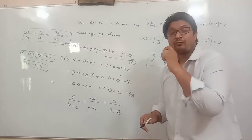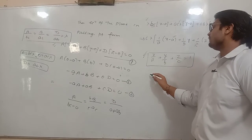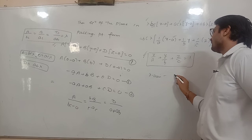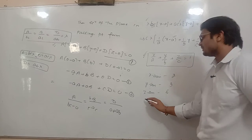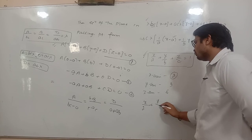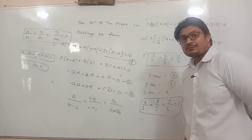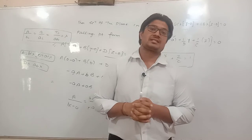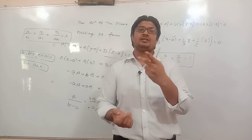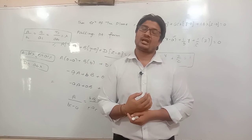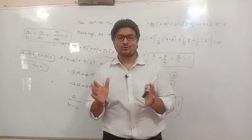याद रखना — plane की intercept form में equation ऐसी होगी। अब हम इसे directly use करेंगे। अगर कोई plane x-axis पे intercept 2, y-axis पे 3, और z-axis पे 6 करे, तो उस plane की direct equation होगी: x/2 + y/3 + z/6 = 1। इस तरह से plane की equation intercept form में लिख सकते हैं। Thank you.